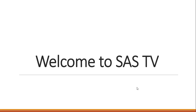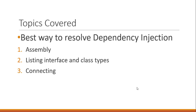Hello guys! Welcome to the second sub-part of dependency injection in ASP.NET Core Web API tutorials. In this video we are going to see the best way to resolve dependency injection. The ways to do it are: first, work with the assembly; next, list the interfaces and class types; and finally, connect both the lists. So let's get started.